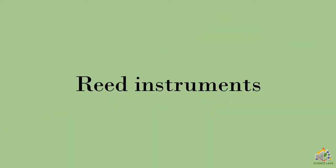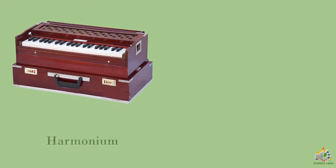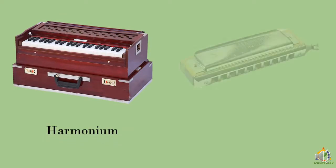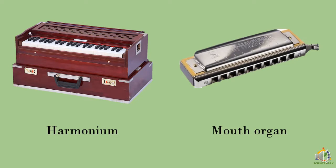The next type is reed instruments, with two examples: harmonium and mouth organ. Wind is blown through a metallic opening in which the air vibrates. Now here is a question: before seeing these instrument types, we saw a short clip of an instrument you can make at home called Jal Tarang. Can you tell which type of instrument Jal Tarang is? Just think about it.